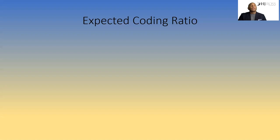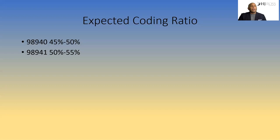If this ratio doesn't change, they're going to look at your notes. What is the expected ratio based on Anthem, Medicare, and Optum? The expected ratio for 98940 is probably 45 to 50%. 98941 is slightly higher — 50 to 55%, and some as high as 60%. 98942 is as little as zero, maybe 5%, not as often. They indicate 98941 would likely be the higher ratio. It's a matter of making sure if it's much higher, you're justifying it based upon complaints that really fit, not always trying to find adjacent regions.